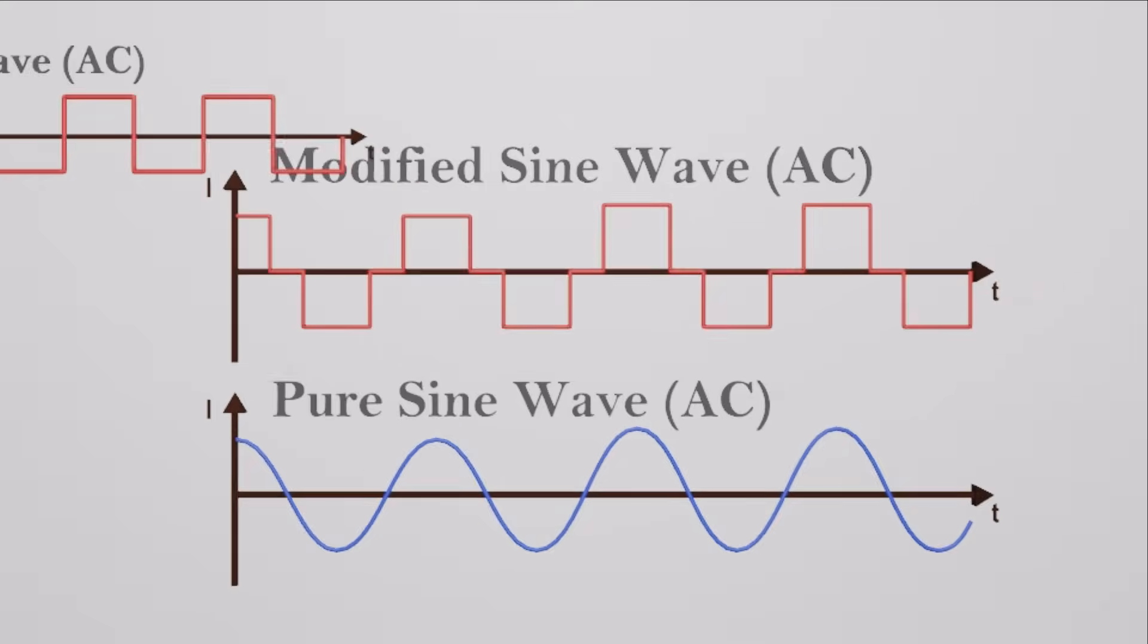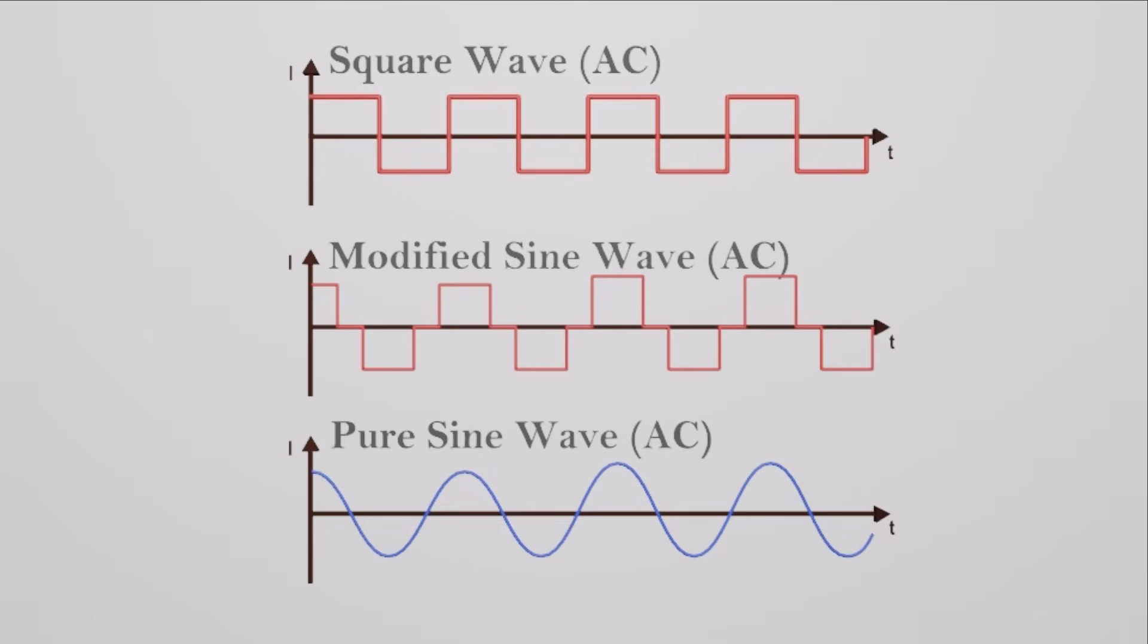So as we described there are three major types of inverters: square wave, modified sine wave and pure sine wave. Square wave type is the most basic and cheapest one and the pure sine wave type is the most complex and costly one. You can select one according to your requirement.